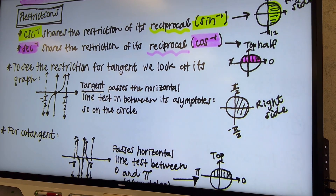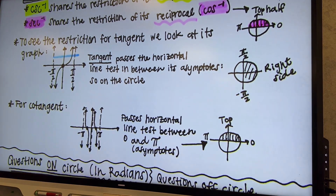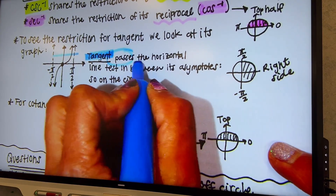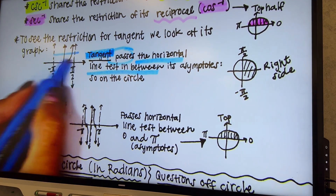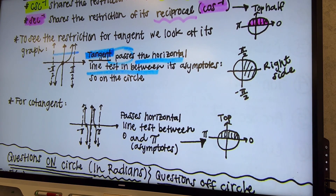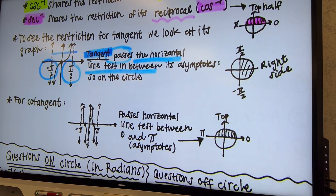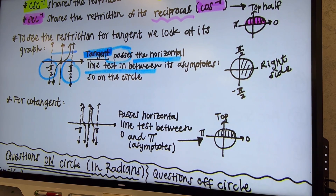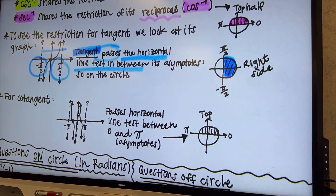To see the restriction for tangent, we have to look at its graph. Tangent passes the vertical line test, and it also passes the horizontal line test, but only in between its asymptotes — because you have to stop at those walls. So it does have restrictions even though it passes both tests, because it has asymptotes. The asymptotes are at negative pi over two and positive pi over two. That's the same as sine inverse, which is the same as cosecant inverse. So tangent is also restricted to just the right-hand side of the unit circle, between pi over two and negative pi over two.